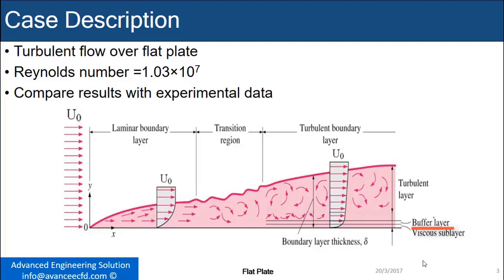The buffer layer is the intermediate layer where flow neither behaves as pure laminar nor pure turbulent, but intermediate between these two flows.